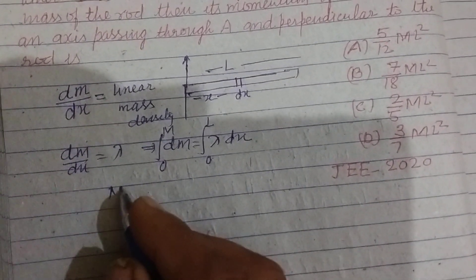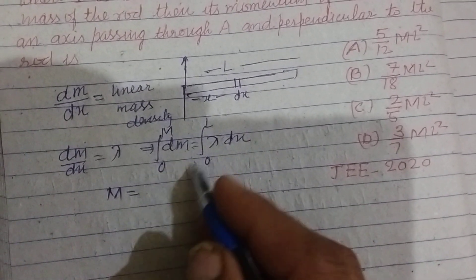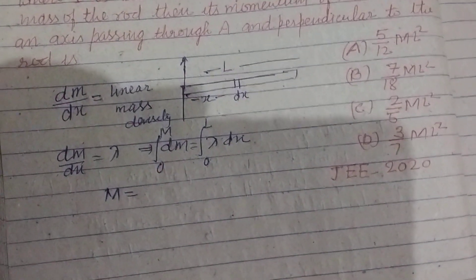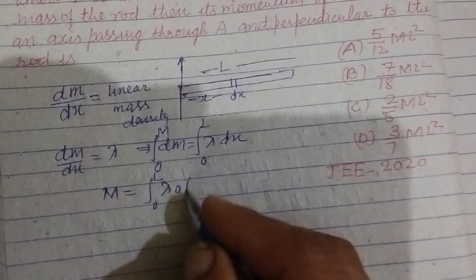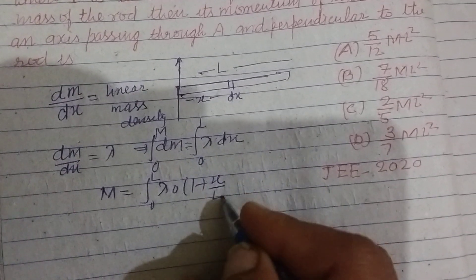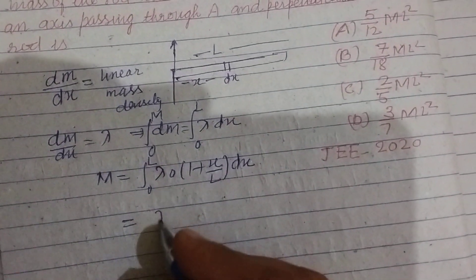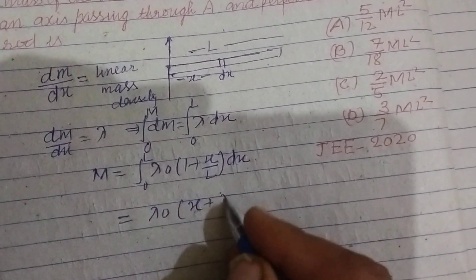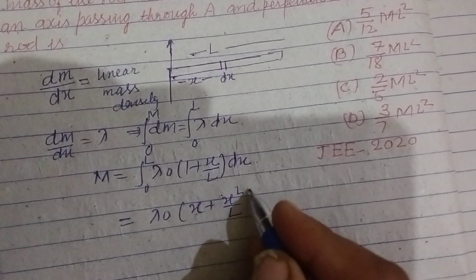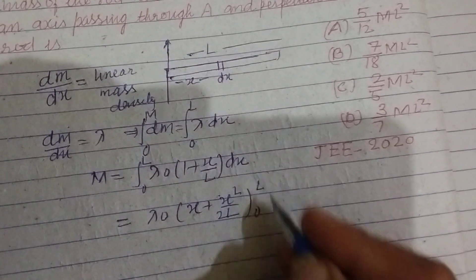Here this is M and this is lambda as given, lambda naught times 1 plus x over L into dx. Now, integrating this, lambda naught is constant, x plus x square by 2L. Limit applied 0 to L.